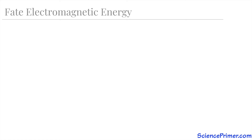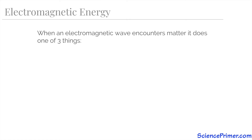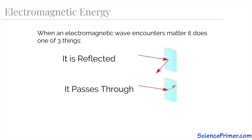When electromagnetic energy encounters matter, one of three things can occur. It can reflect off of the matter and continue to move through space in a different direction. It can pass through the matter and also continue on into space. Or it can be absorbed. Which of these three things occurs depends on the specific characteristics of both the electromagnetic energy and the matter involved.